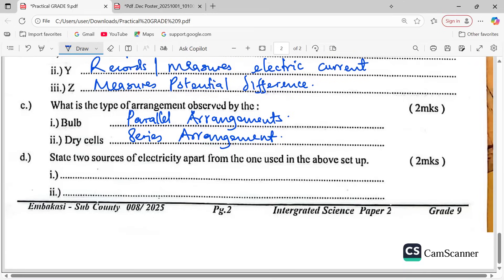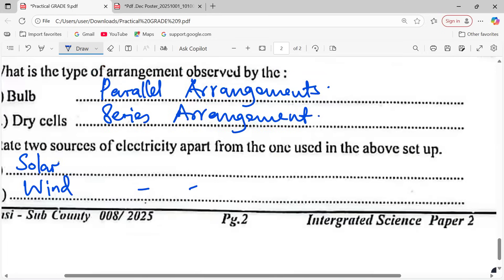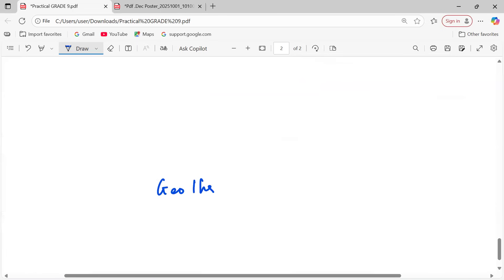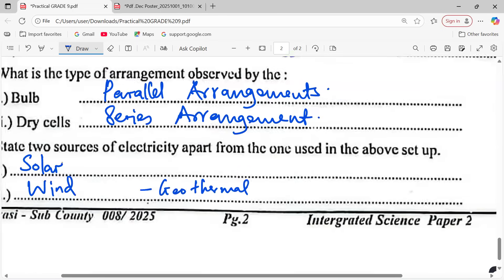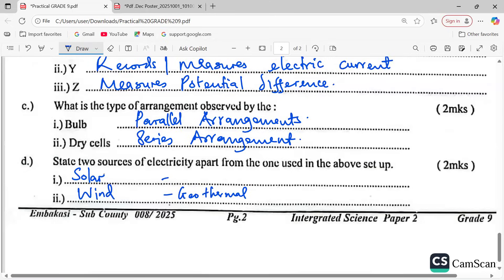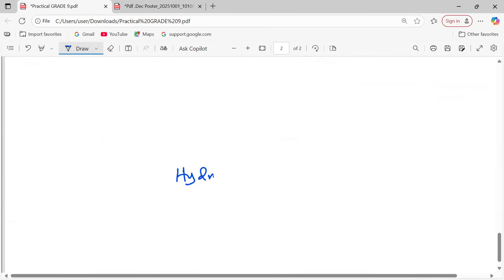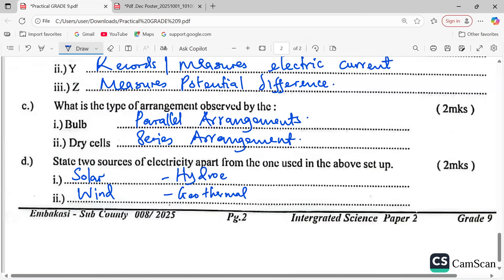Part B: State two sources of electricity apart from the one. We can have solar energy, we can have wind energy, we can have geothermal power, we can have hydroelectric power.